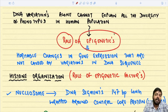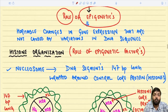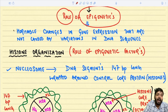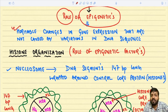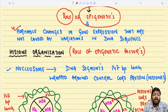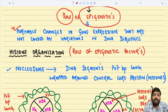Epigenetics is defined as heritable changes in gene expression that are not caused by variations in the DNA sequence. The term literally means 'above genetics' — it is above the understanding of genetics. These are heritable changes, and epigenetic alterations or epigenetic dysregulation are implicated in cancer.